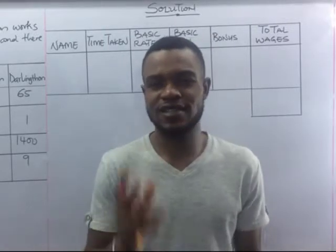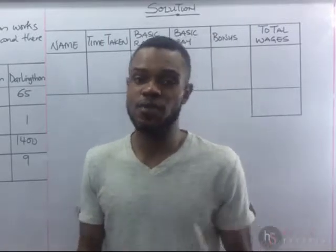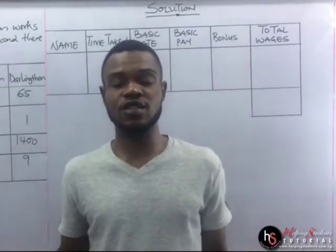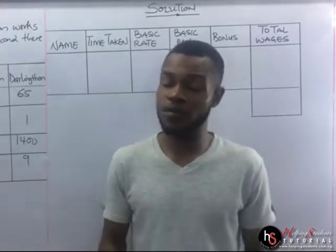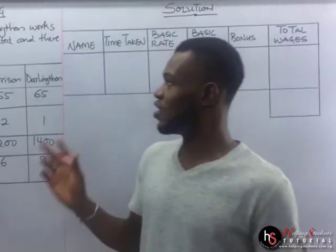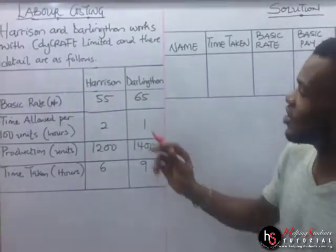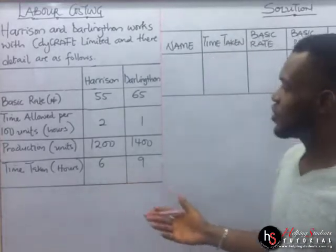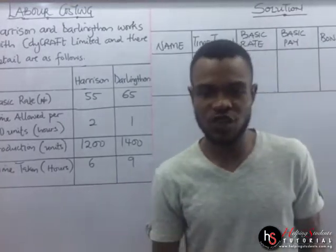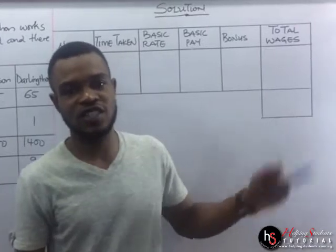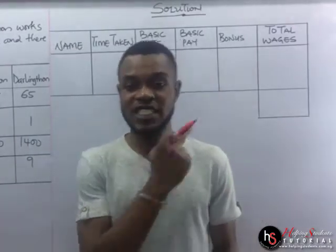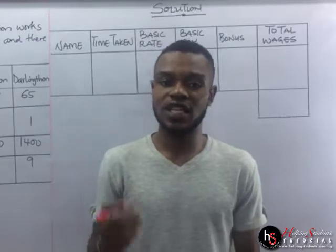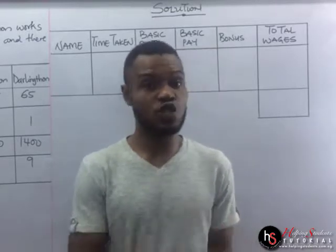Hello, you are highly welcome. This is the second example under labor costing, and I got this question from the Yabatek past question. The only difference is I changed the names. We have a question and, just like in the introductory video, we have this table on the board where we have the name, the time taken, the basic rate, the basic pay, the bonus, and the total wages.